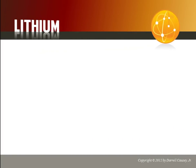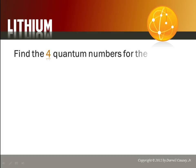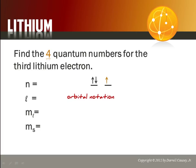Let's look at lithium. Find the four quantum numbers of the lithium, the third lithium electron. So, let's go ahead and put it out. There's our numbers. Orbital notation. And the electron we're looking for is right here. And, of course, we now have our electron configuration up.